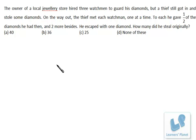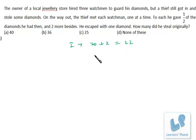Suppose the answer is 40. To the first watchman: gives half of 40 = 20, plus 2 more = 22 given, leaving 18. To the second: half of 18 = 9, plus 2 = 11 given, leaving 7. But 7 is odd — he can't give half to the third watchman. So 40 is wrong. Now try 36: to first watchman gives 18+2=20, leaving 16. To second gives 8+2=10, leaving 6. To third gives 3+2=5, leaving 1. Correct! So 36 is the answer.